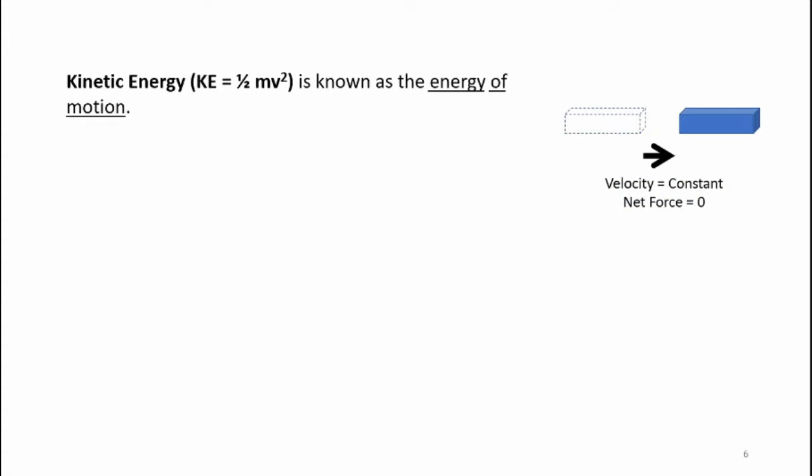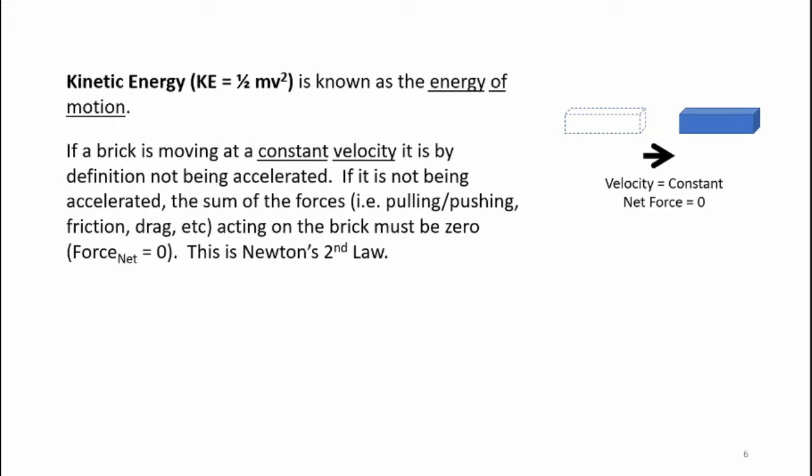Kinetic energy — KE equal to one-half mass times velocity squared — is known as the energy of motion. If a brick is moving at a constant velocity, it is by definition not being accelerated. If it is not being accelerated, the sum of the forces — for example, pulling or pushing force, friction force, or drag force — acting on the brick must be zero, meaning the net force is equal to zero. This is Newton's second law in action.